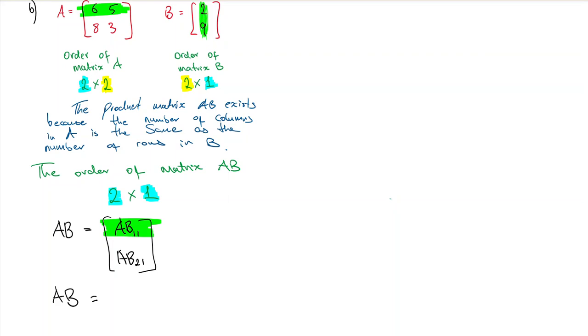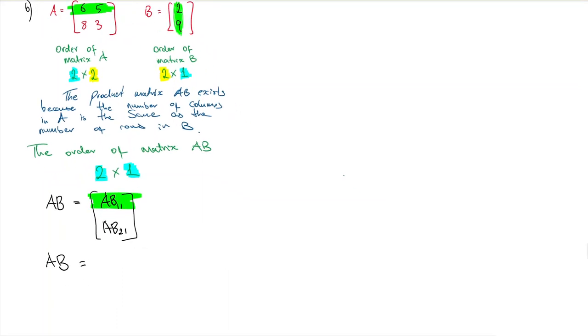So I want to know 6 times 2 plus 5 times 9, and that will give me that top value, which is AB₁₁.